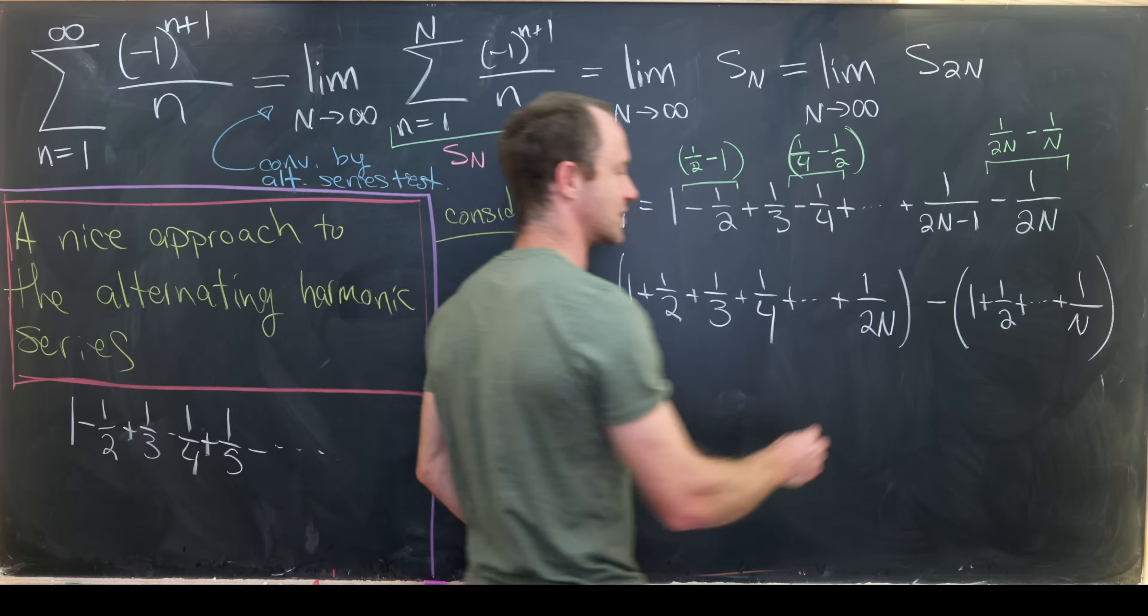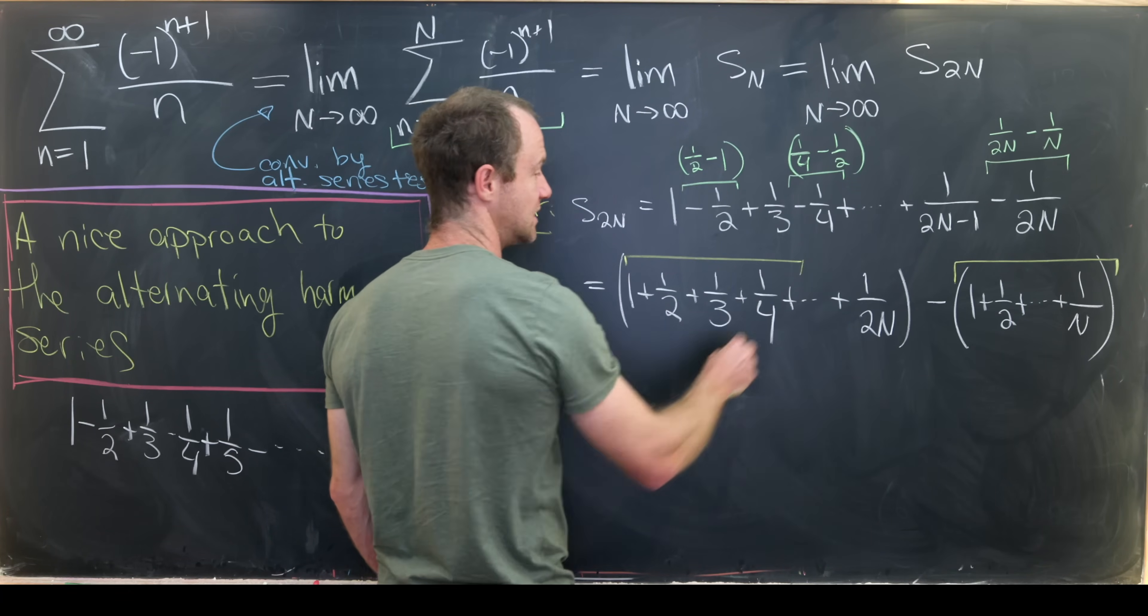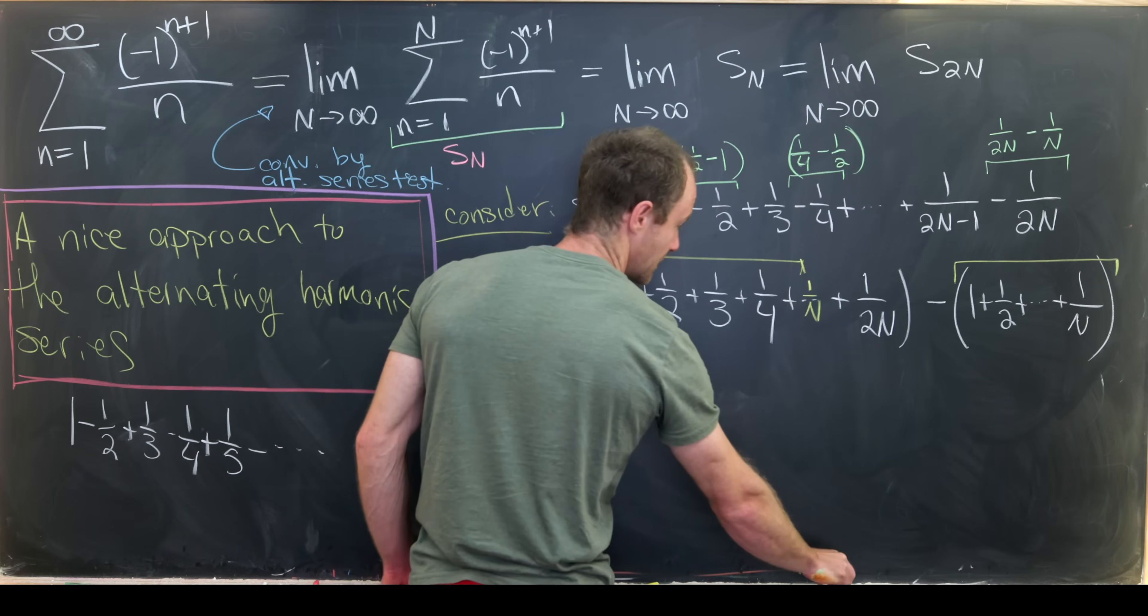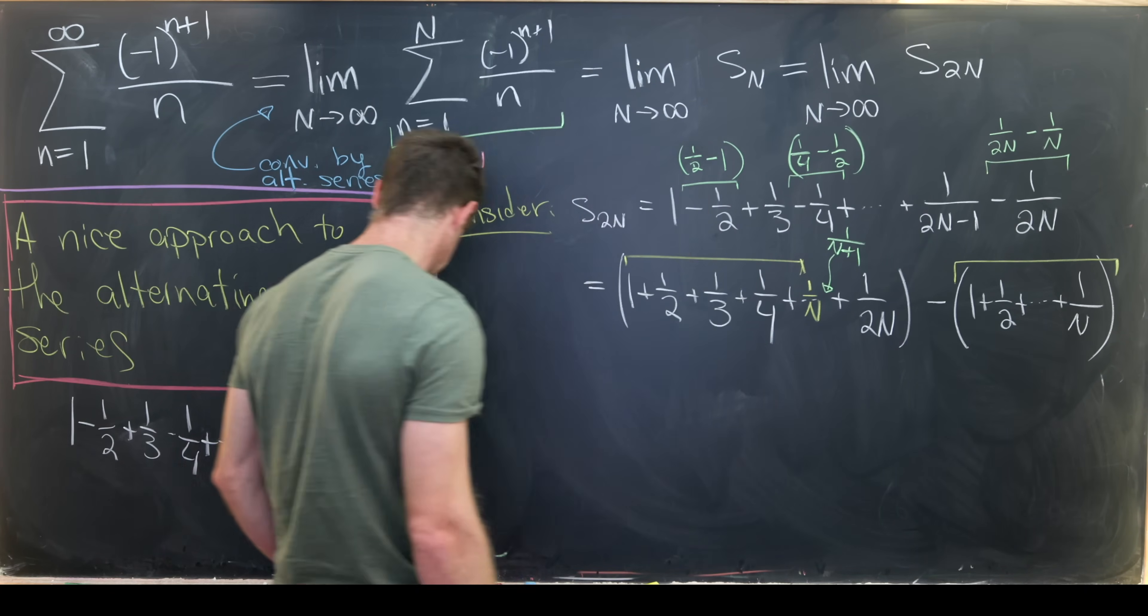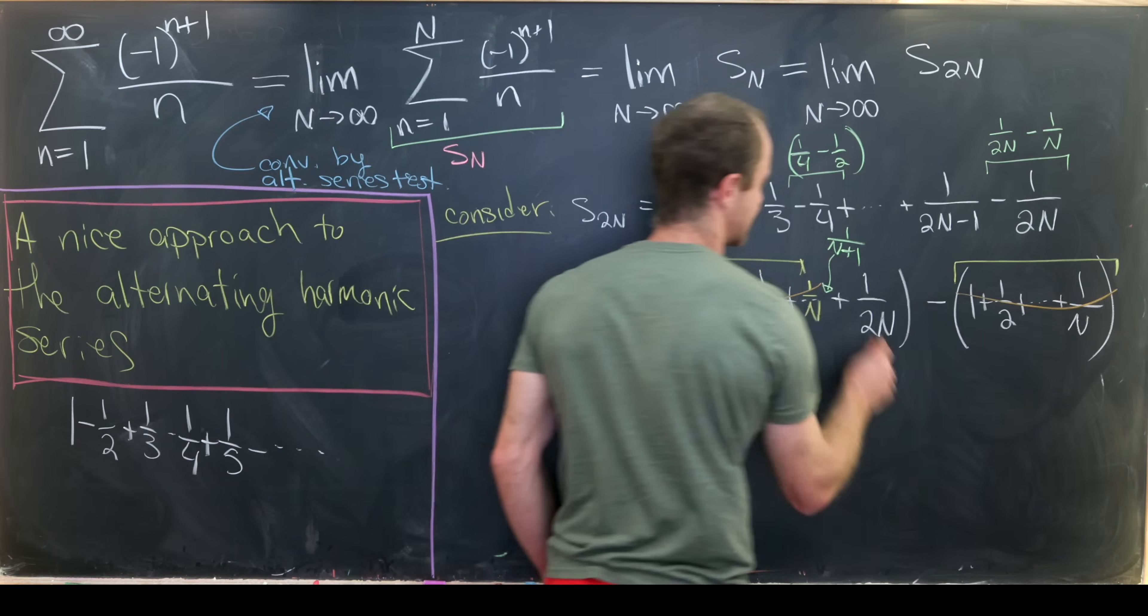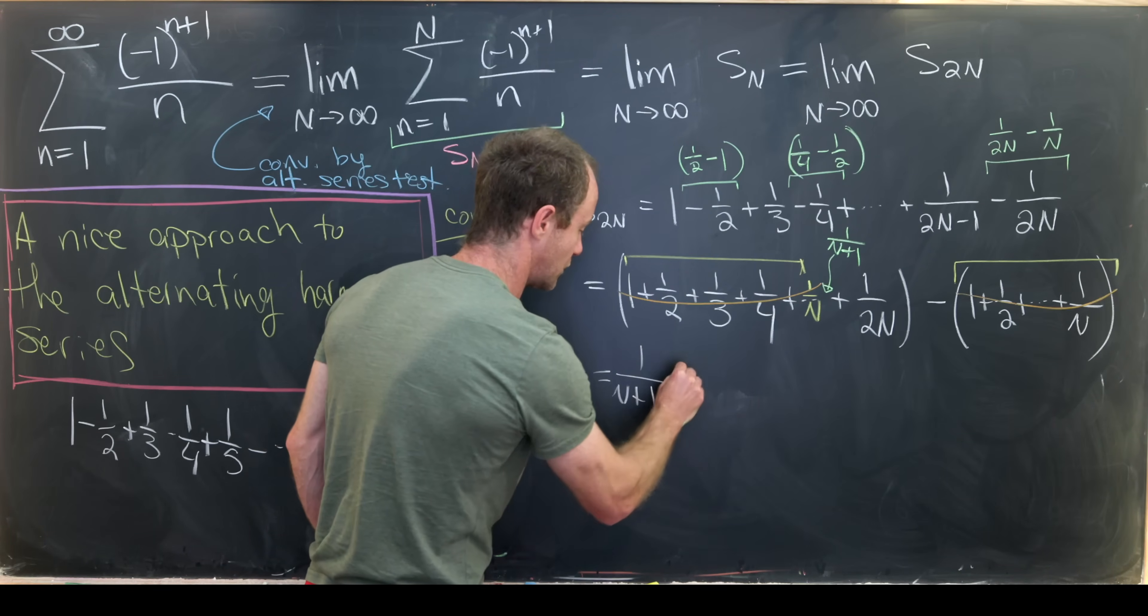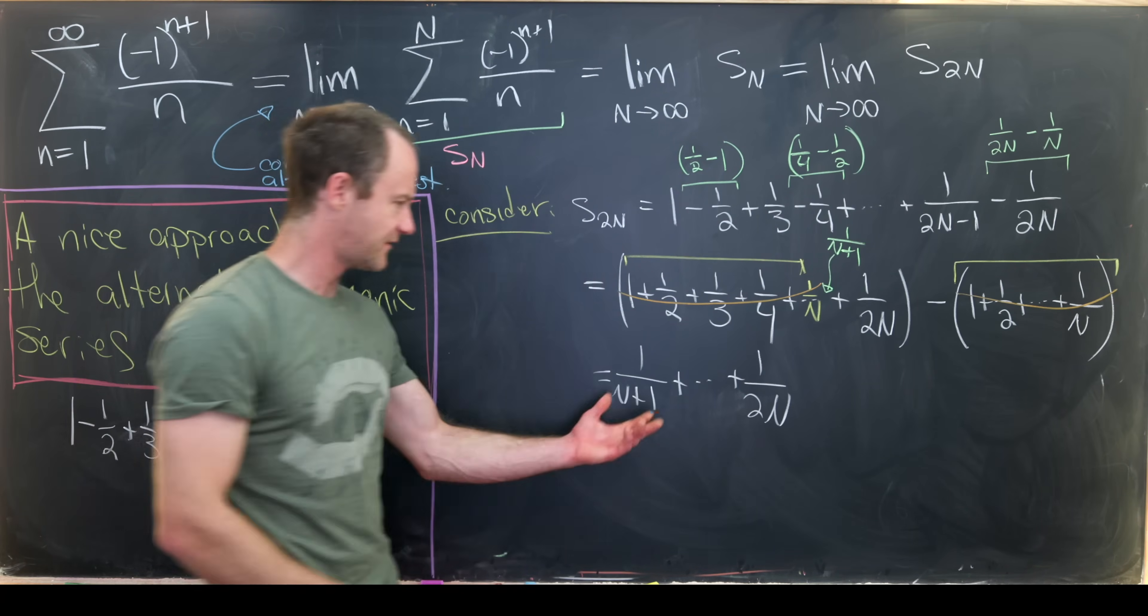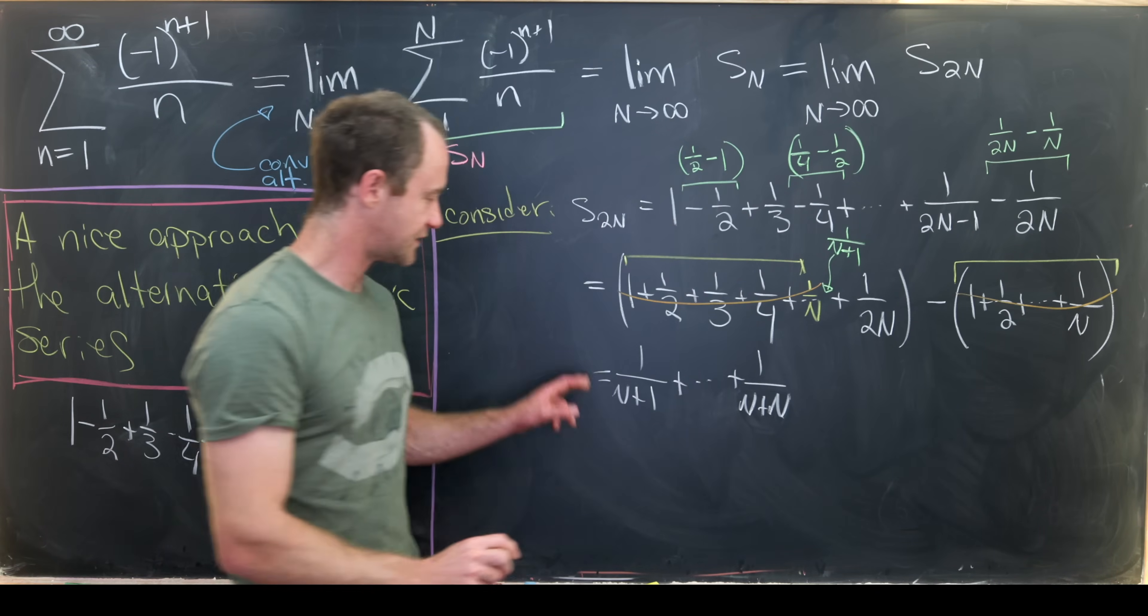But notice that this entire sum here lives as the first half of this sum. So let's say we could cut it off right here and let's say this is the 1/N term. That means right after this 1/N term is 1/(N+1). That does not get canceled. So just to write it out, all of this cancels with all of this. And we're left with this sum from 1/(N+1) all the way up to 1/(2N).